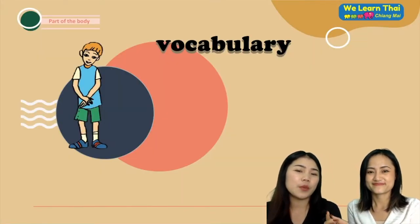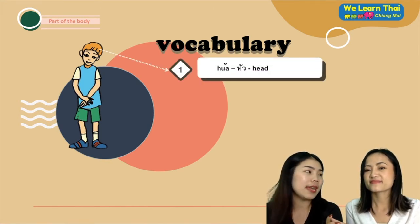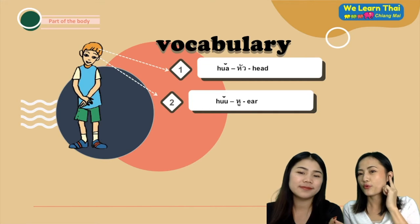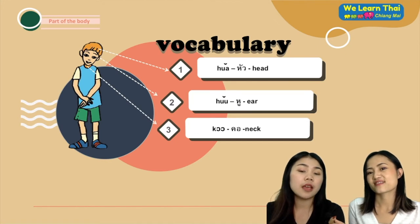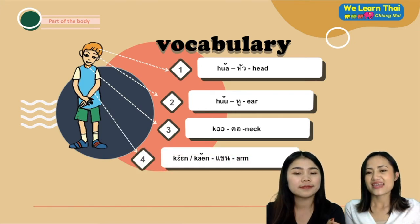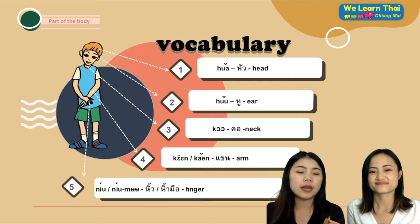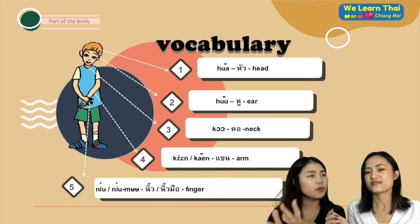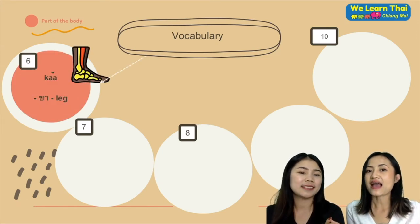We're going to start with vocabulary. The first one is head. The next one is หู, meaning ear. The next one is คอ, meaning neck. Then แขน, meaning arm. And the next one is นิ้ว or นิ้วมือ, meaning fingers.